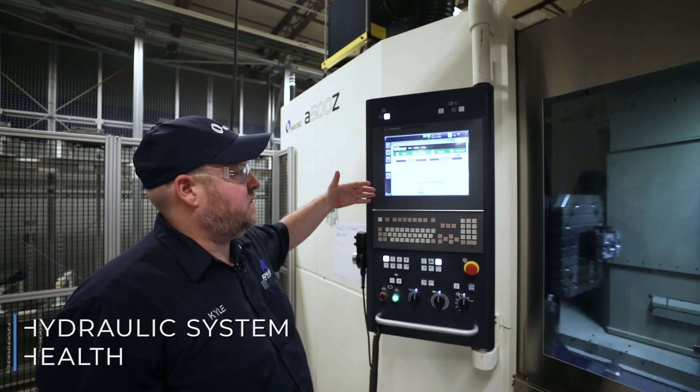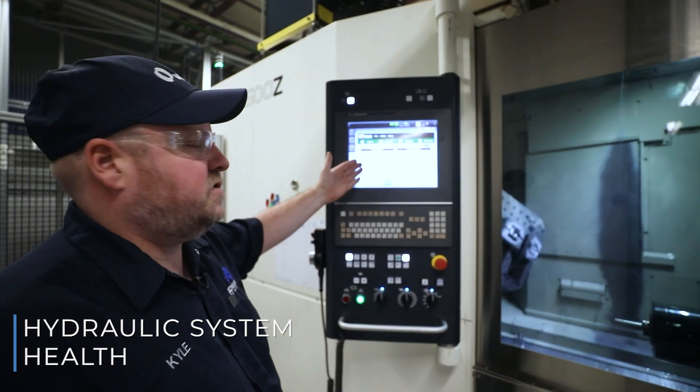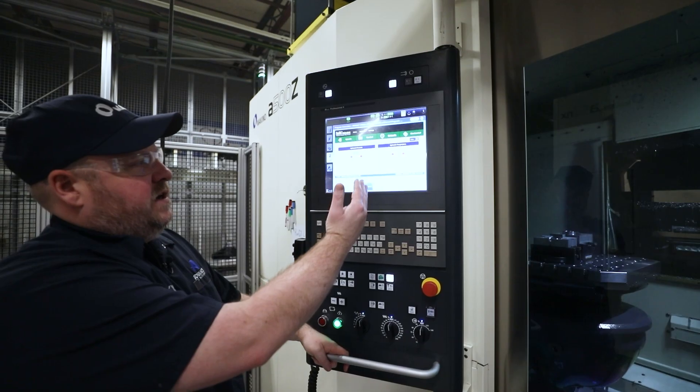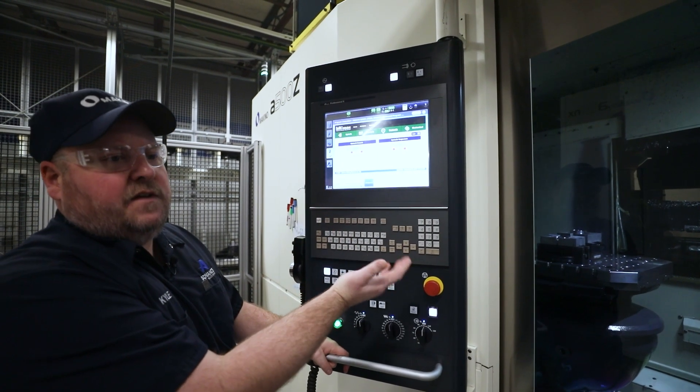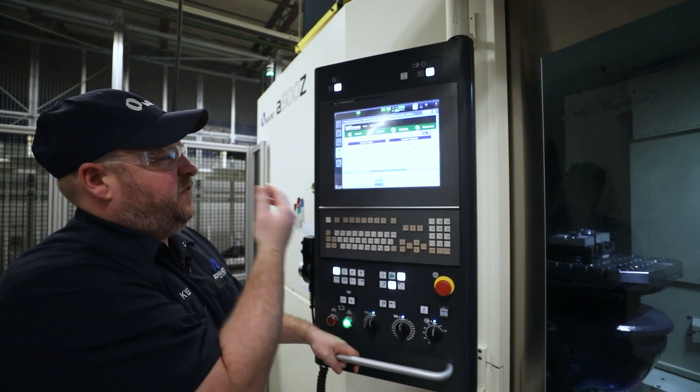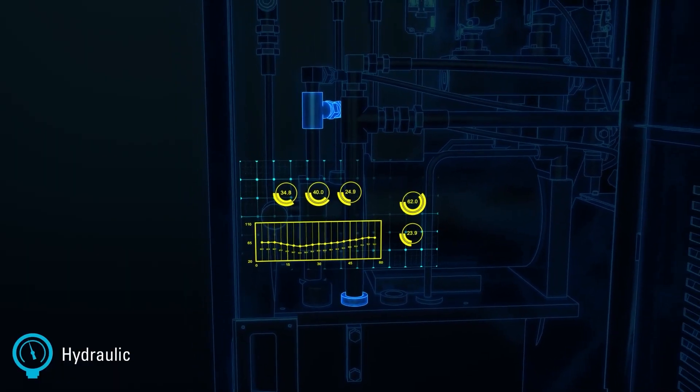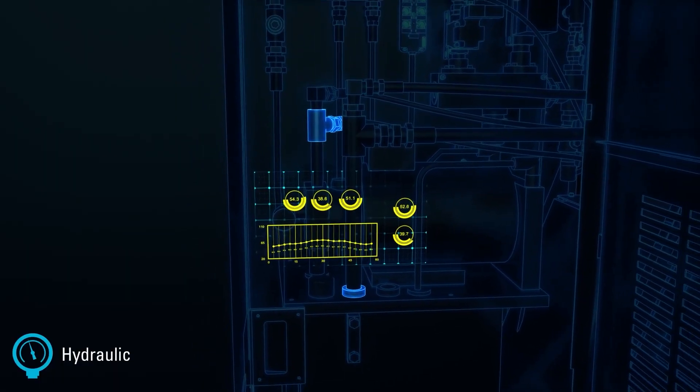And the same way with the hydraulic side of things, it keeps track of the flow and the temperature. So at any time, if any of these go into a yellow state, it gives you a warning. If it goes into a red state, it's going to give you an alarm and shut your machine off before it can do any damage or at least help contain it to one area.